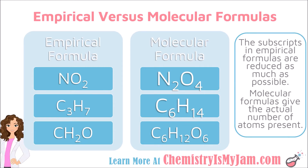Here is another example. C6H14 is a molecular formula — it is not in the lowest possible form. Both of those numbers are divisible by 2, so the empirical formula is C3H7. A final example is C6H12O6, where all of the numbers are divisible by 6, which gives an empirical formula of CH2O.